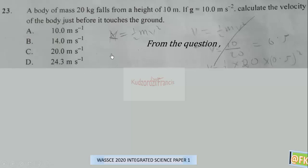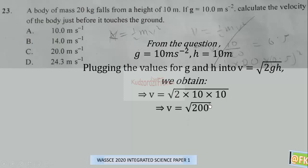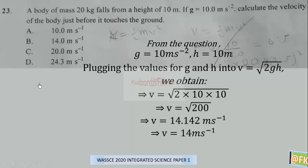From the question, g = 10 and h = 10. Substituting into the formula: v = √(2 × 10 × 10) = √200, which gives v = 14.142 meters per second. The correct answer is B.